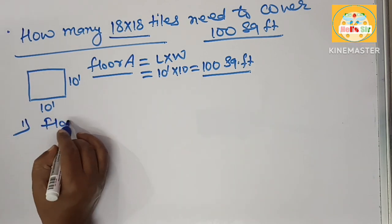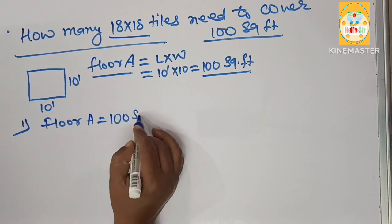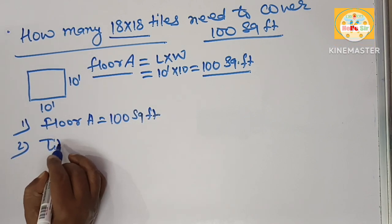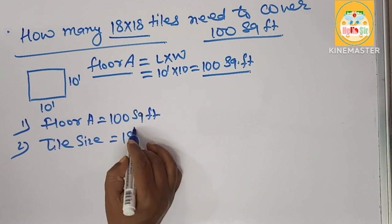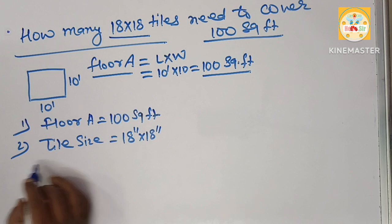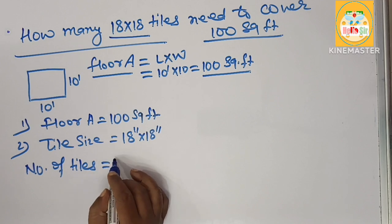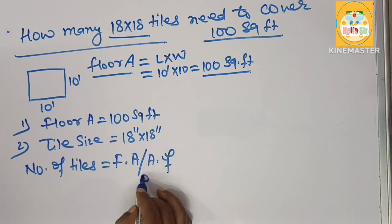Floor area, you have given 100 square foot, and the tile size you have given is 18 inches by 18 inches. Here is the formula to find out number of tiles equals floor area divided by area of one tile.